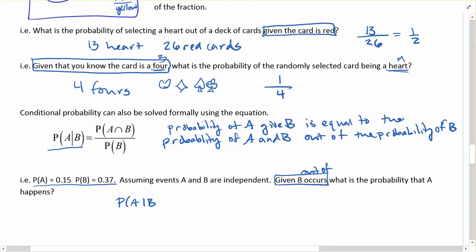So the probability of A given B will be equal to the probability of A and B. Remember they're independent, so that means the probability of A times the probability of B will give us the and, so 0.15 times 0.37 gives me 0.0555. So because they're independent, I know that. So I'm going to have 0.055 out of the probability of B, 0.37, and you get 0.15.